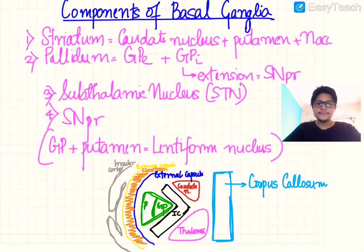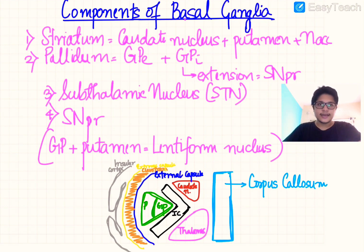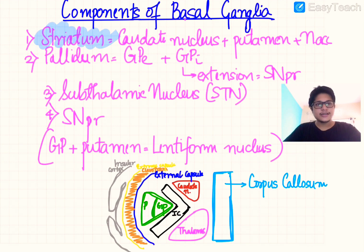Hello everybody. In this video I'll be discussing the anatomy and physiology of the basal ganglia, and then I'll provide a brief overview of Parkinson's disease. The basal ganglia has the following components: it has the striatum, which is essentially the combination of the caudate nucleus, the putamen, and